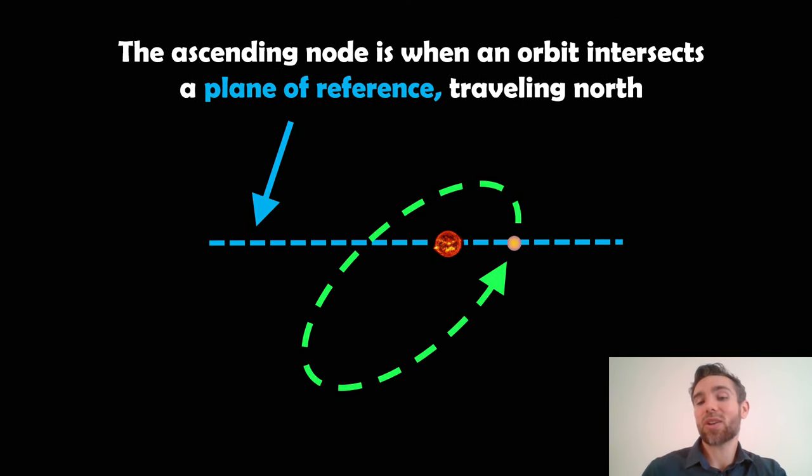Now the ascending node is the opposite one. This is where it actually moves through the plane of reference and it's going north.